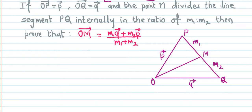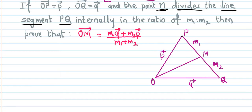If OP vector is P, then OQ vector is Q vector, and the point M divides the line segment PQ internally in the ratio M1 is to M2. We need to prove that OM vector is equals to M1 Q vector plus M2 P vector upon M1 plus M2.